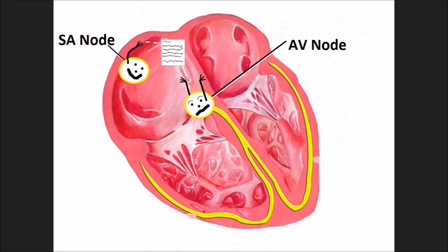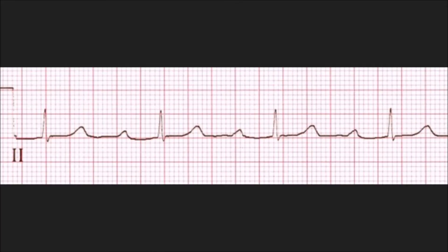Let's take a look at this ECG strip. You will see in front of you a first degree AV block, and you can tell that it is because the PR interval is far too great to be normal — it is greater than 0.20 seconds.